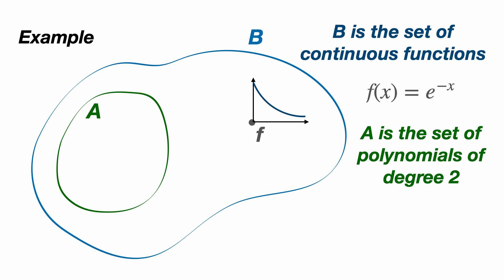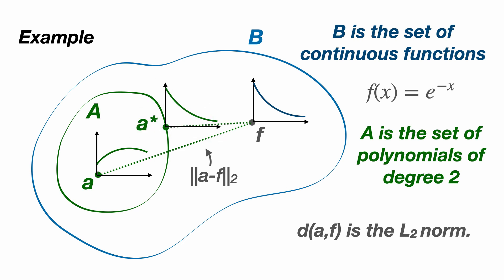We can then define the distance between any function A in capital A and F as an L2 norm of A minus F over the interval. In this case, the best approximation from capital A to F is the function A star which minimizes the L2 norm of A minus F.